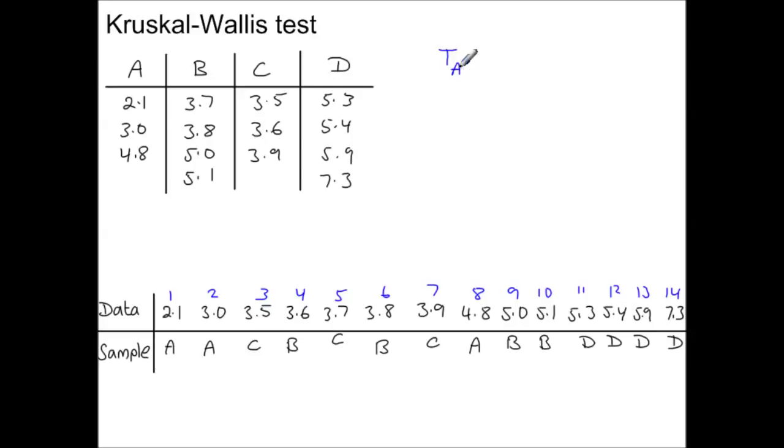And then work out the total for sample A, the total of all the ranks for sample B, total for C, for D, and the sample size for each one. A's got 3 values, B has 4, C has 3 values, sample D has 4 values. So N, the total number of data values in the whole table, is 14. So capital N represents the total number of data values in the table, and the lowercase n represents the individual sample sizes for A, B, C, and D.